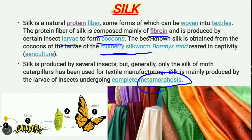Metamorphosis is the process from egg to adult. The process of silk production — the silkworm forming a cocoon — is part of this metamorphosis process. The entire process of forming fabric from silkworms involves metamorphosis, and the rearing process is called sericulture.